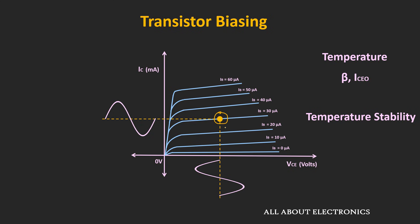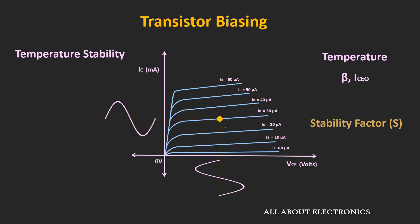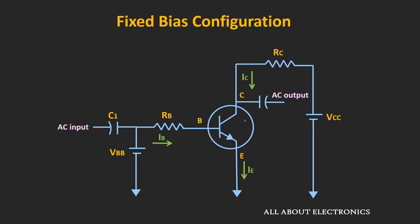The stability of the operating point is defined by the term stability factor, which indicates the change in the operating point with the change in temperature. In this video as well as in the upcoming videos, we will see the different biasing techniques for the BJT and we will compare the stability of the different biasing configurations. Let's start with the very simple fixed bias configuration.